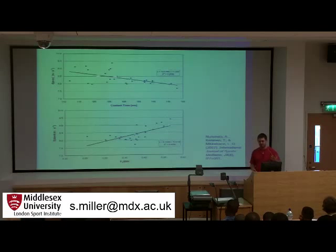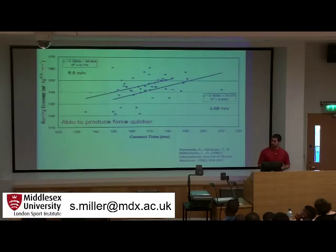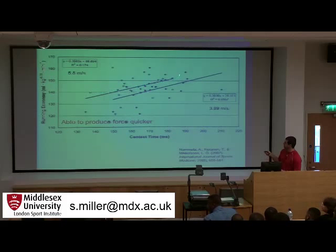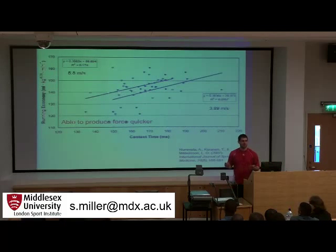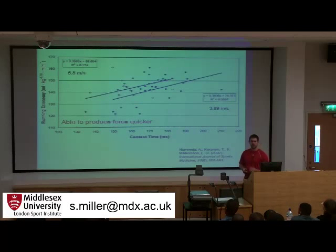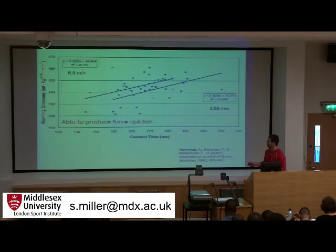Strengthening the Achilles tendon is one suggestion. A shorter ground contact time is associated with better running economy at both slow and fast speeds — the relationship between contact time and economy holds across velocities. This means that to be more efficient, we have to produce force more quickly, requiring a much more explosive muscle-tendon unit.